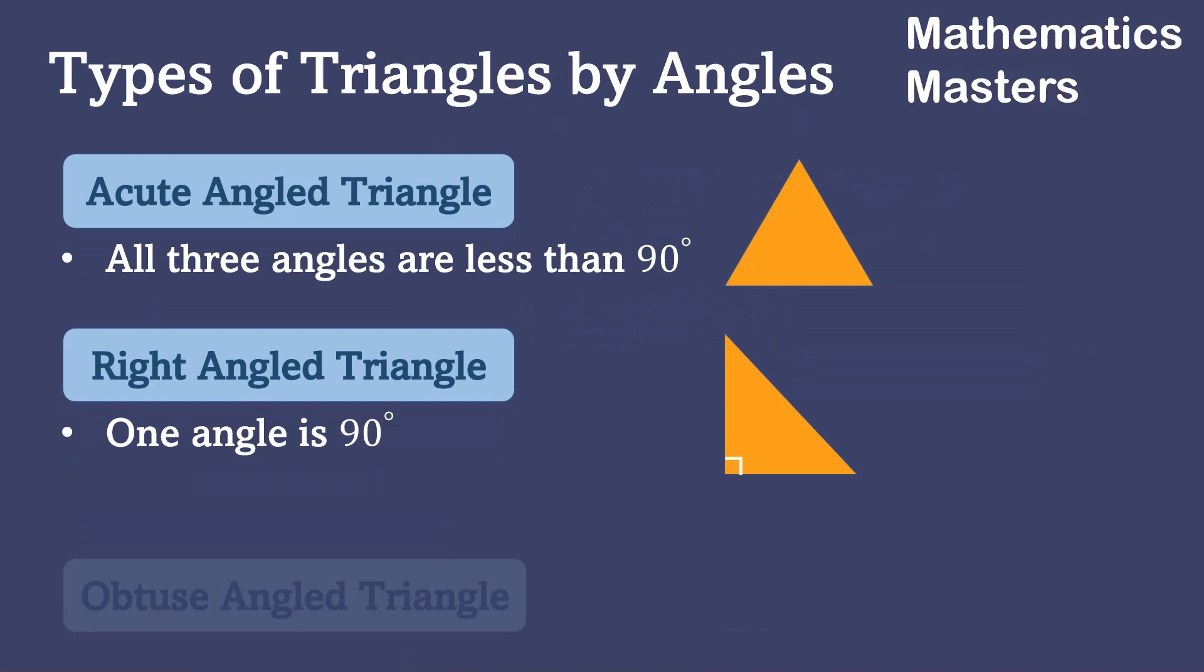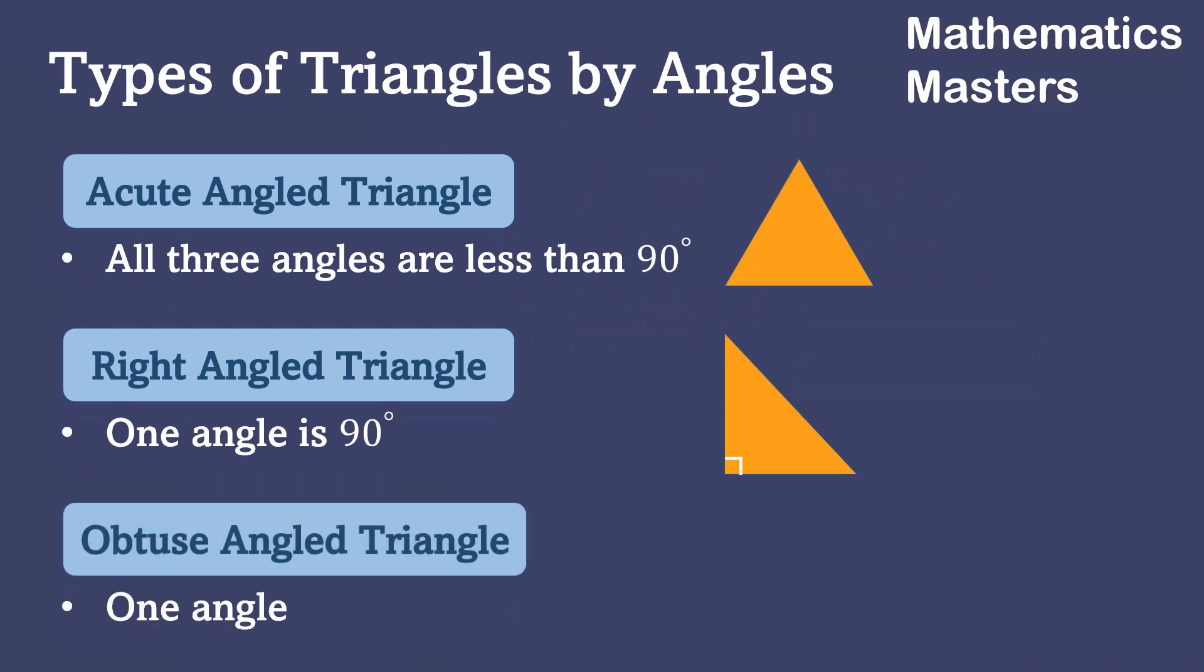The third one is the obtuse angle triangle. It is that type of triangle in which one angle measures more than 90 degrees.